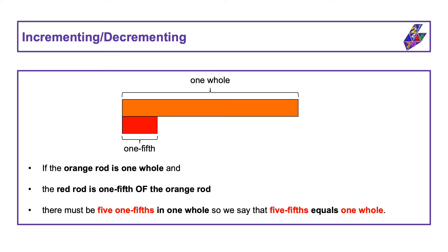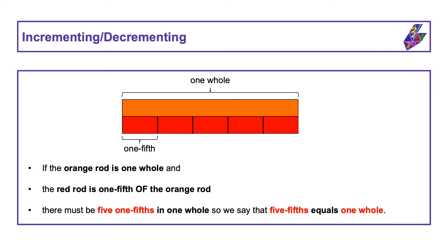One-fifth, two-fifths, three-fifths, four-fifths, five-fifths. We can represent this in an equation like this: five-fifths equals one.